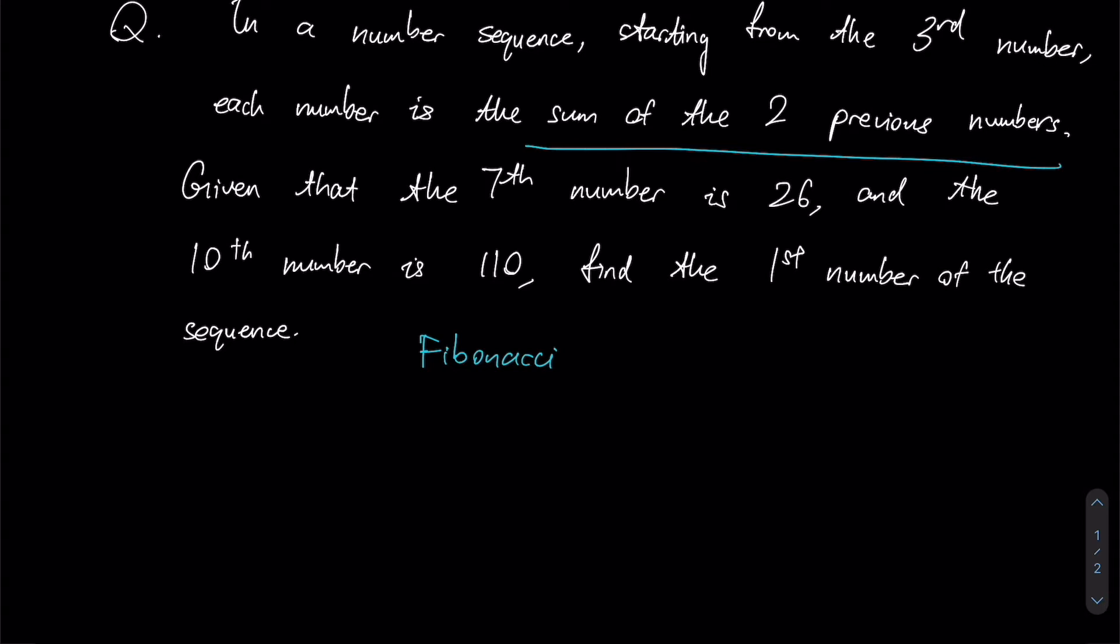Instead of giving us the numbers at the start, they give us numbers somewhere down the middle. So the seventh number is 26 and the tenth number here is 110.